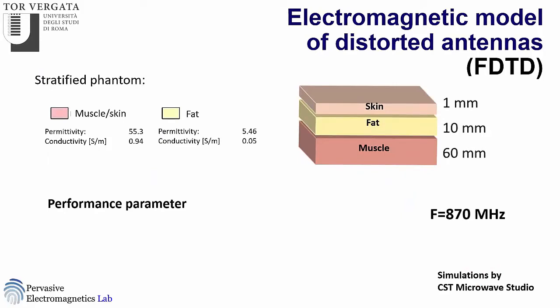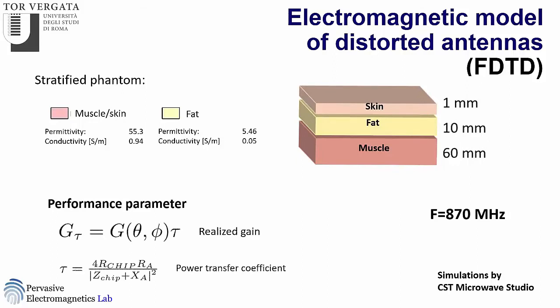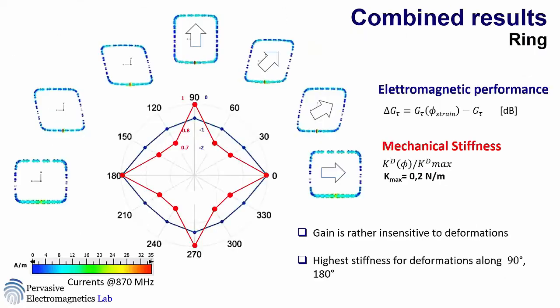Over the deformed antenna, we apply an electromagnetic analysis using finite-difference time-domain (FDTD) with a layered skin-muscle configuration. The performance parameter is the realized gain — the antenna gain multiplied by the power transfer coefficient, which is related to impedance matching between the antenna and the chip. The best value is typically equal to one. We can now put this all together for a combined picture of mechanical and electromagnetic response.